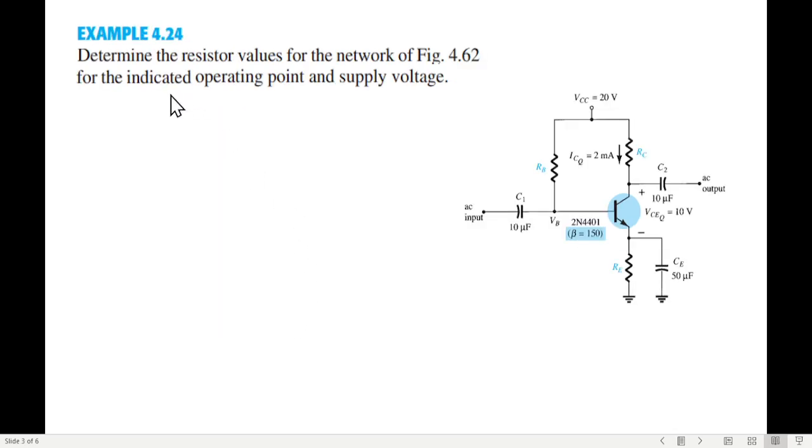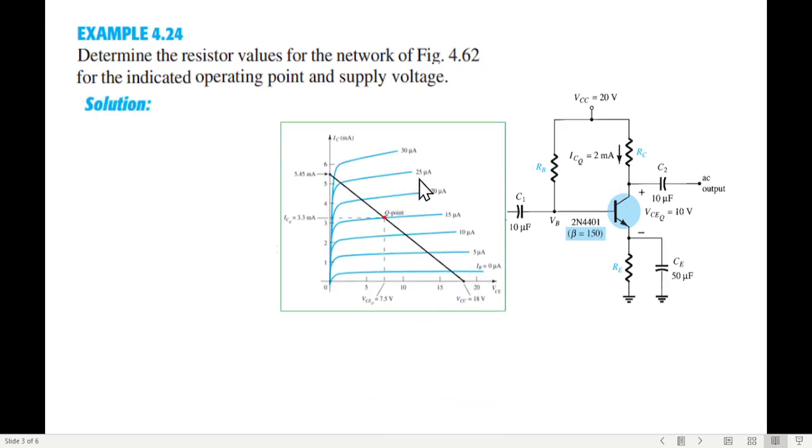So for example 4.24, determine resistor values for the network for indicated operating point and supply voltage. The supply voltage is VCC. We have to say that the current and voltage is ICQ 2 milliampere and VCEQ is 10V. So that's the situation. Just to remind, the characteristics equation is the load line required.